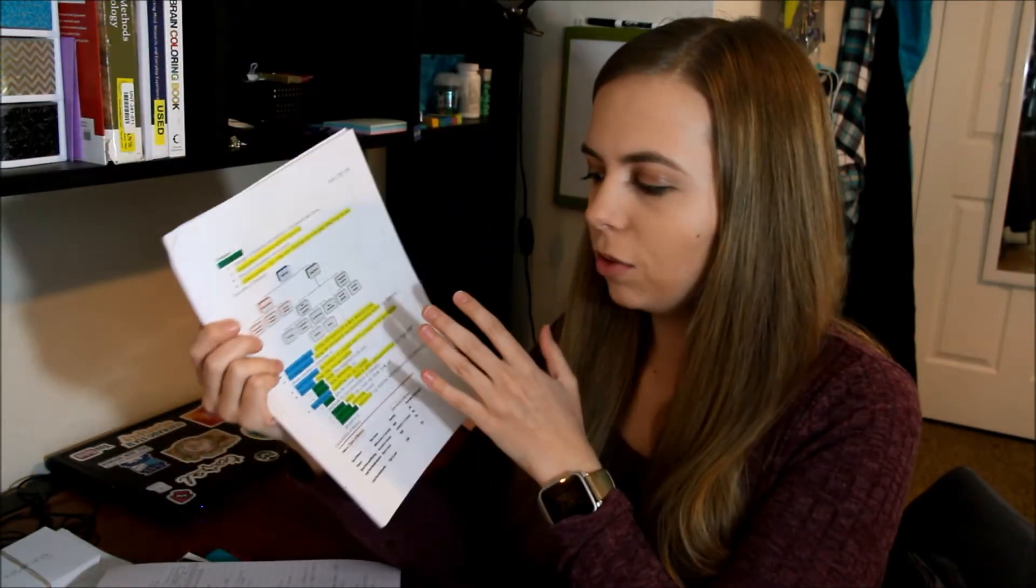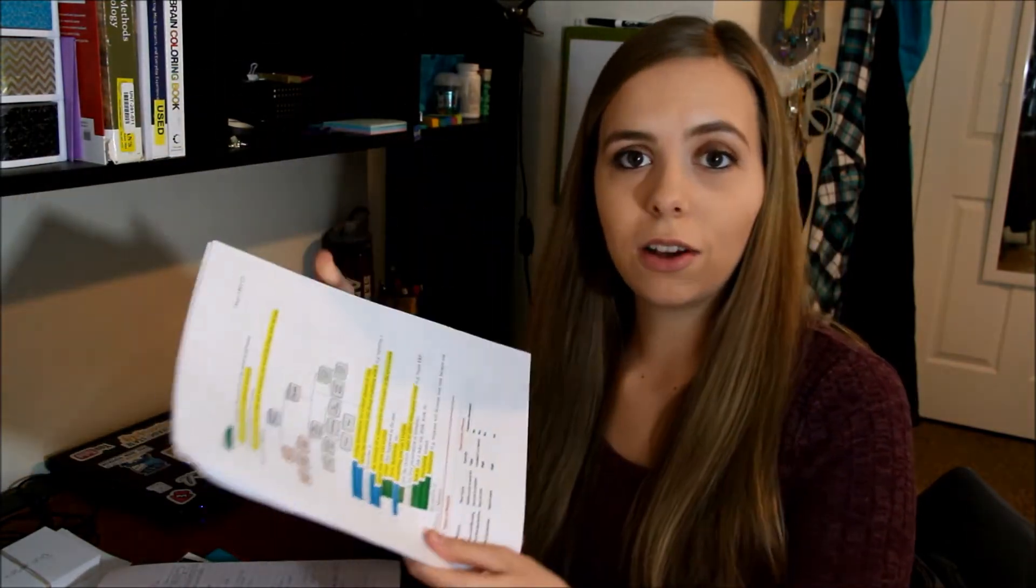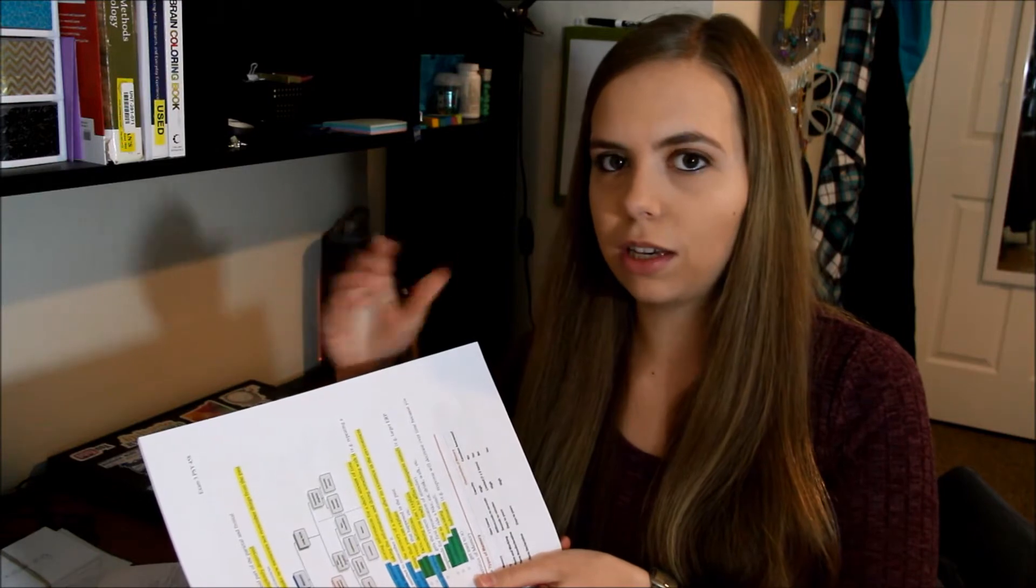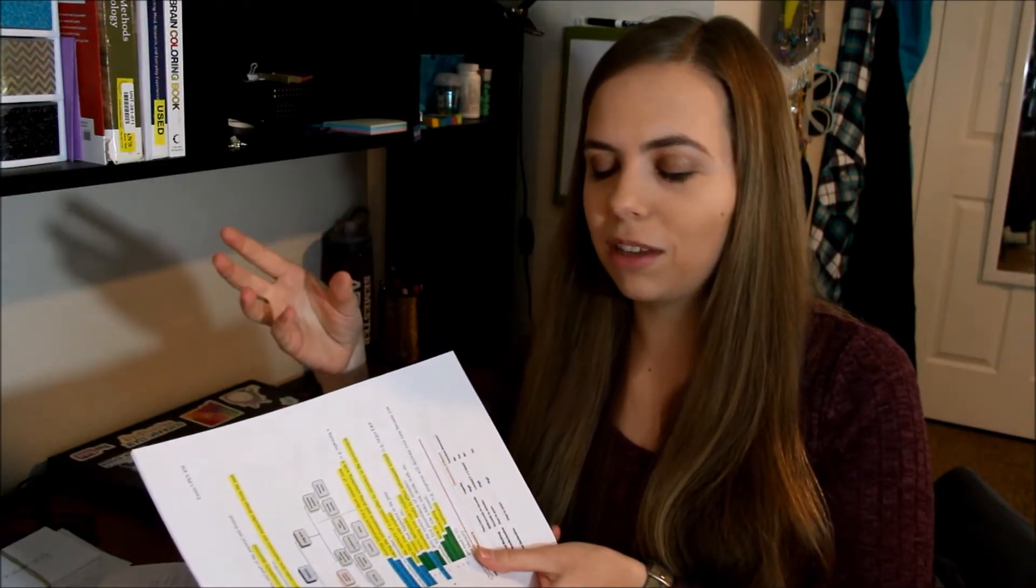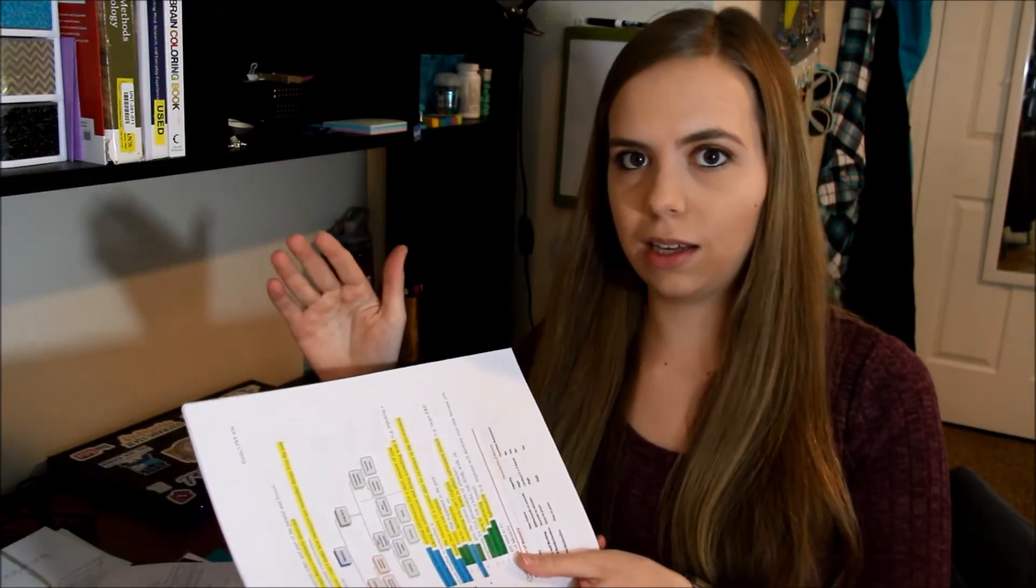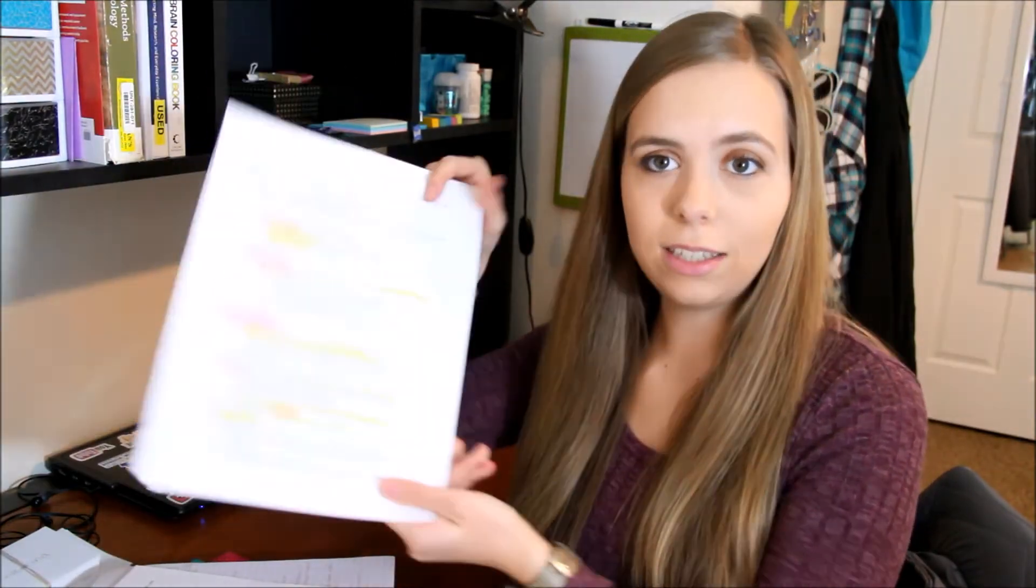So basically you can kind of tell on here it's actually kind of hard because I did my highlighting on the computer and then printed it out in color. But I actually usually highlight after printing out my notes, and usually the colors that I will do is orange means it's a person's name, like a researcher. Then I usually highlight key terms in pink.